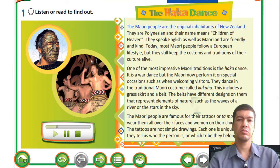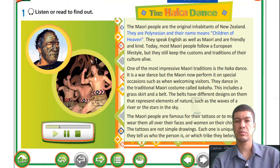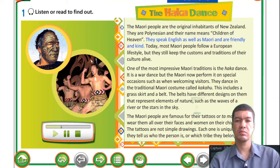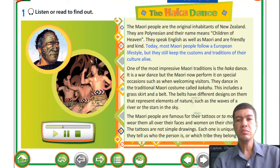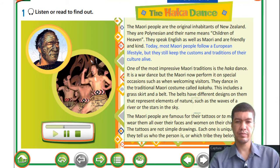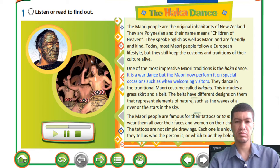The Maori people are the original inhabitants of New Zealand. They are Polynesian and their name means 'children of heaven.' They speak English as well as Maori and are friendly and kind. Today most Maori people follow a European lifestyle, but they still keep the customs and traditions of their culture alive. One of the most impressive Maori traditions is the Haka dance.